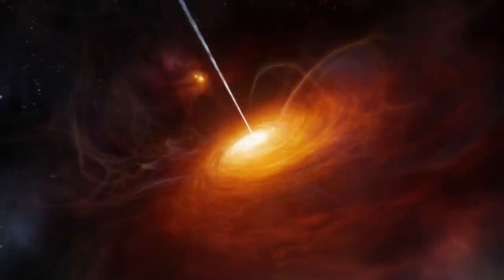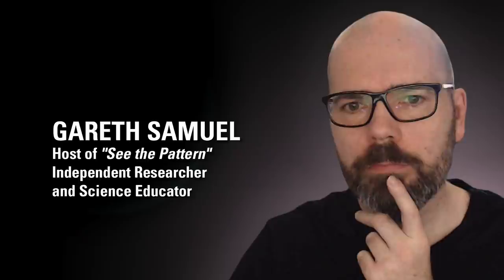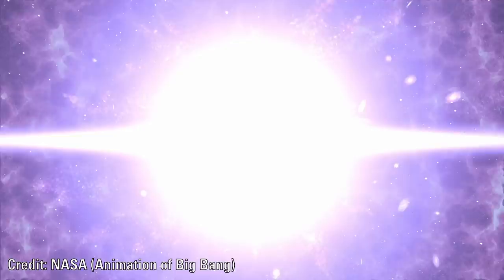Within the jets the plasma travels at relativistic speeds. This combined with the fact that the beams point towards us makes the blazars appear much brighter. They are very variable as well and can undergo rapid changes in brightness in short timescales of hours to days.